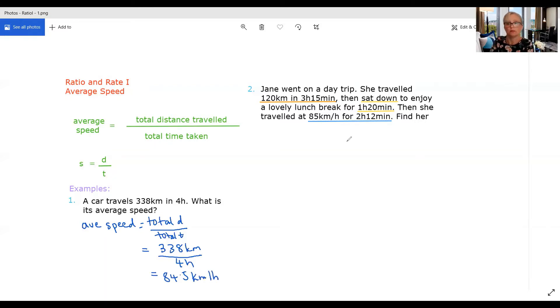Our next question is considerably more difficult. We have a three-stage journey. There's part A where Jane is travelling 120 kilometres in 3 hours and 15 minutes. Then she sat down for lunch, so she wasn't travelling anywhere for 1 hour and 20 minutes. And then she travelled at 85 kilometres per hour for 2 hours and 12 minutes.